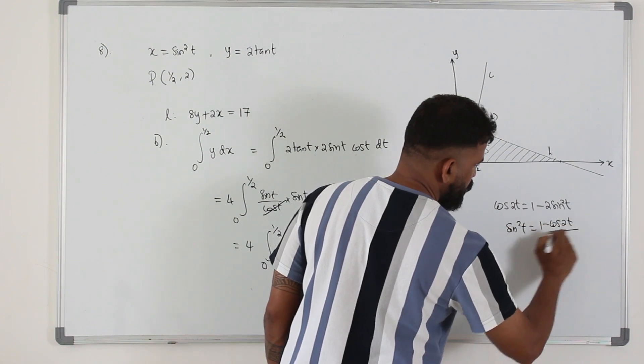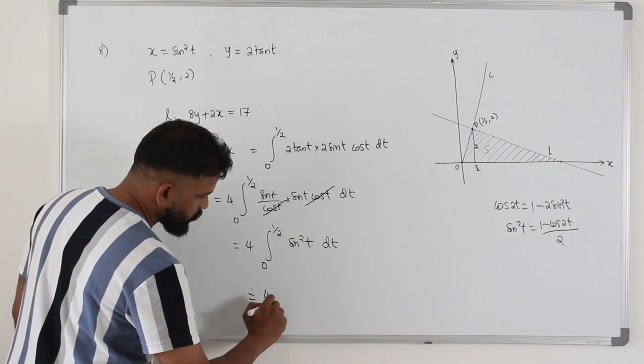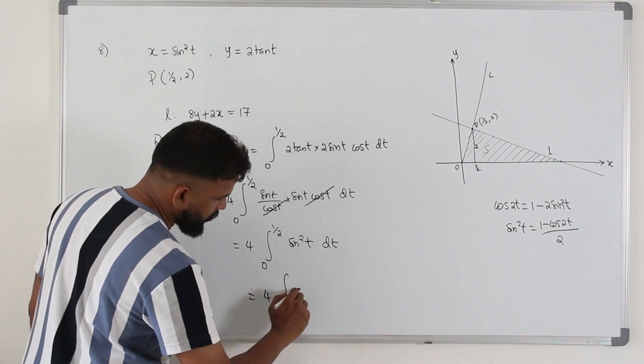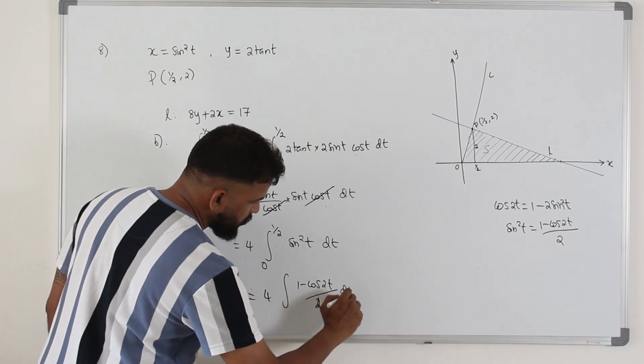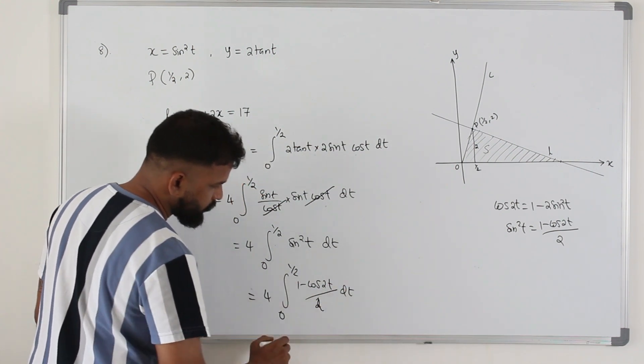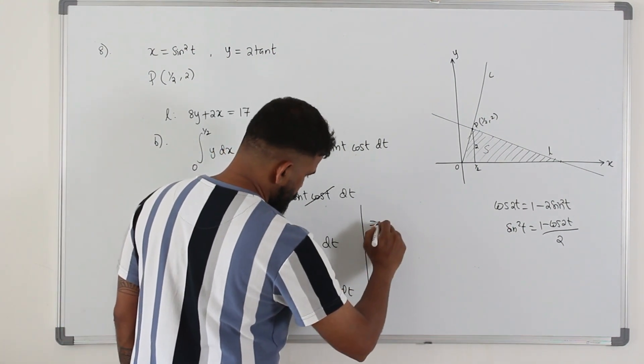And rearrange, make sine square t as a subject. You will get 1 minus cos 2t over 2. Apply this here and integrate. So it's going to be integral 1 minus cos 2t over 2 dx, 0 to half. You cancel this, you will get 2.